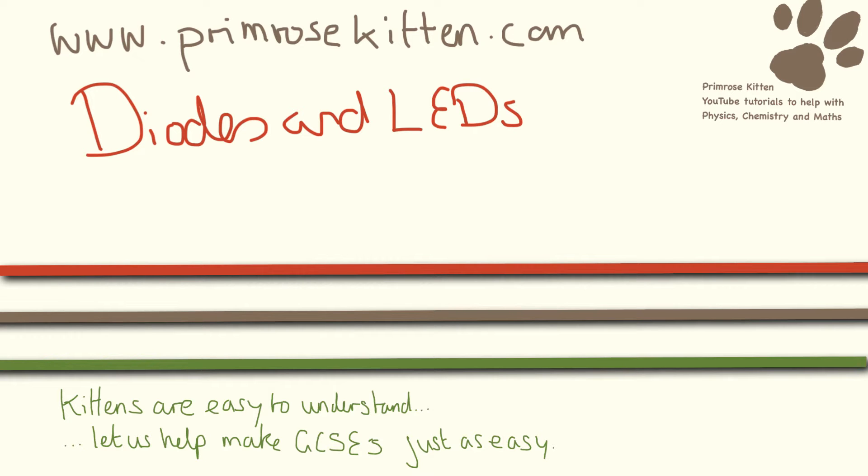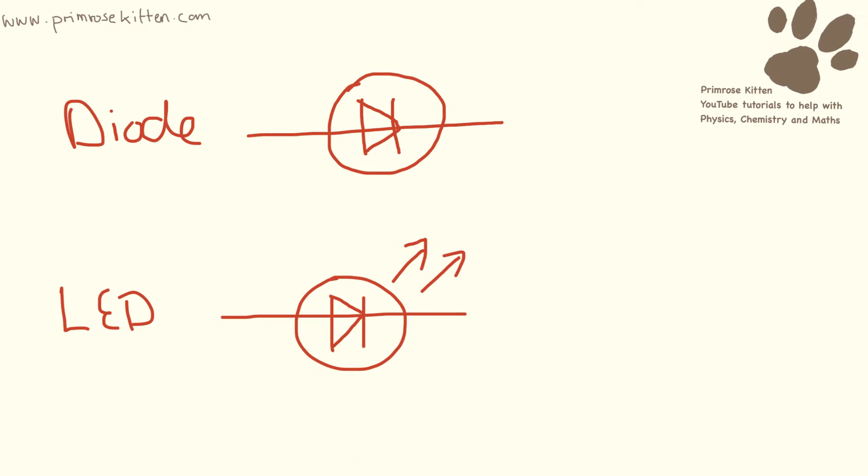These are awesome little things that you need to know about. First of all, these are the symbols that you need to learn for diodes and LEDs. If you're a bit confused with what LED stands for, it is a light emitting diode. LED, which is why the symbols are really similar. The LED has these arrows coming off of it and that's the light being emitted.